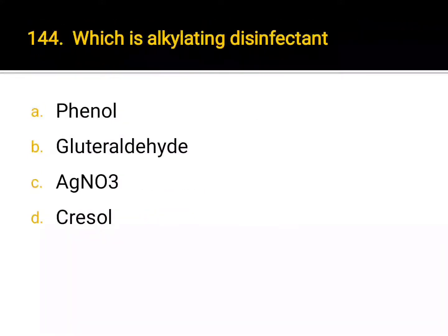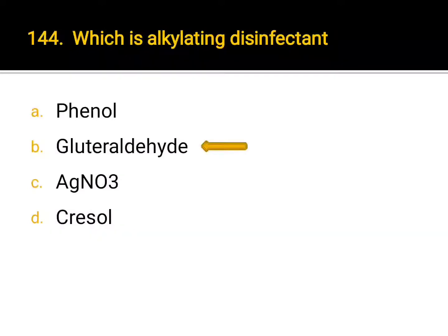Which is an alkylating disinfectant? A. phenol, B. glutaraldehyde, C. ethylene oxide, D. formaldehyde. Correct answer: B. Glutaraldehyde.